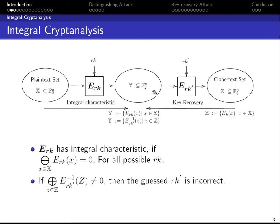After that, we can convert this distinguishing attack to a key recovery attack by appending some rounds after the distinction. When we get the ciphertext set Z, we guess the round key and partially decrypt this set to another version of the set Y. And if the XOR sum of this set is not zero, we discard the round key candidate because it is wrong.